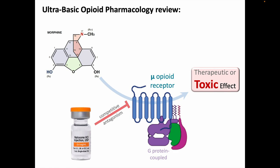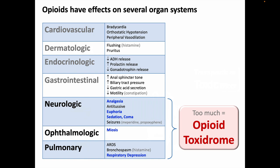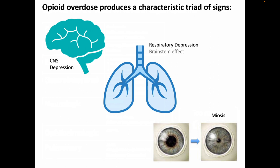Opioid agonism has effects on several organ systems, the most notable of which are effects on the nervous system, the eye, and on respiration. Exposures to too much opioids should result in an opioid toxidrome. The classic opioid toxidrome produces a triad of signs: CNS depression, respiratory depression — which is a subset of CNS depression at the respiratory center in the brainstem — and miosis, small pupils.